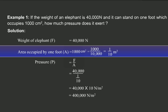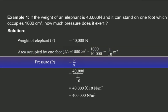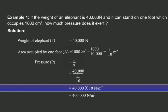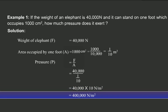Now, let us calculate pressure using the relation: pressure is equal to force by area. This is equal to 40,000 divided by 1 by 10,000, which is equal to 40,000 into 10 Newton per meter square, or 400,000 Newton per meter square. Therefore, the elephant exerts 400,000 Newton per meter square pressure.